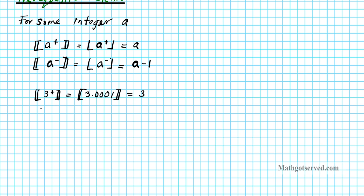What if we were to do the greatest integer function of three from the left? This can be considered as getting arbitrarily close to three from the left on the number line — written as 2.999. The greatest integer function asks: what is the biggest integer smaller than this? It's clearly two, which is the same as three minus one.